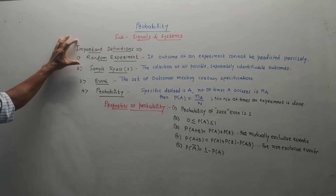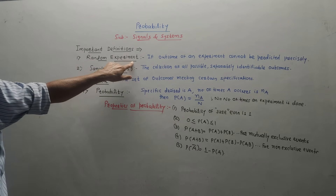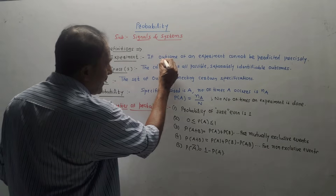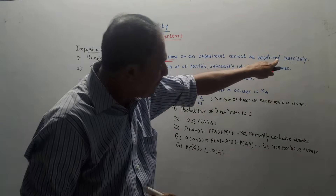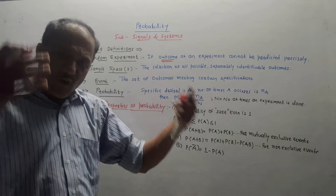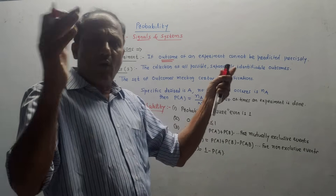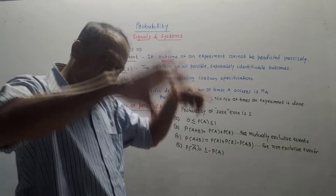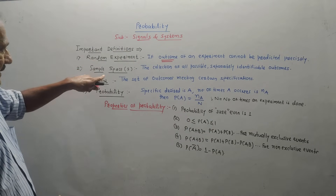First, we will discuss some important definitions. The first definition is a random experiment. If the outcome of an experiment — remember, outcome means output — cannot be predicted precisely. For example, if you are tossing a coin, we can't predict whether the output will be head or tail. Such experiments are called random experiments.